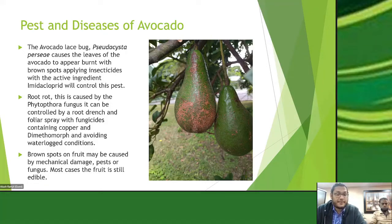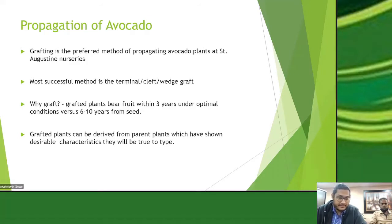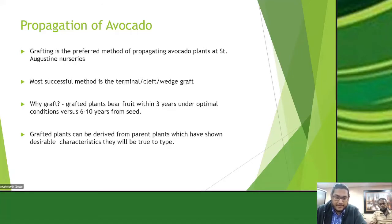The preferred propagation method used at St. Augustine Issues is grafting — specifically the cleft graft, also known as the wedge graft. A grafted plant will bear fruit in less time — about three years once conditions are optimal — whereas a plant from seed could take 6 to 10 years. Additionally, the parent plant from which the graft material is taken can be selected based on desirable characteristics: disease resistance, soil adaptation, or the type and amount of fruit it produces.